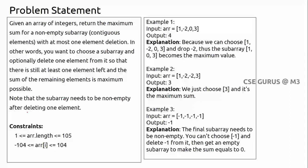Note that the subarray needs to be non-empty after deleting. For example one: `[-2, 0, 3]`, the maximum sum subarray output is 4. We can choose all elements and drop one — we check for the negative or minimum value to drop to maximize the sum.